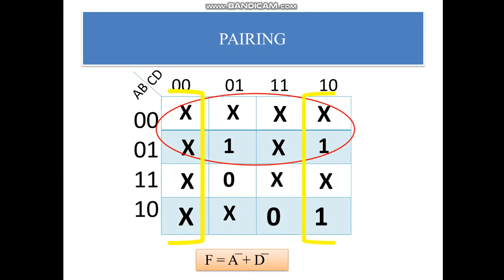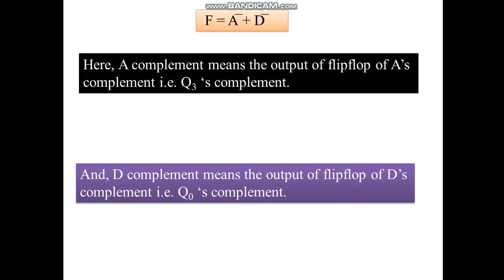The result, F equals to A complement plus D complement is shown now. Here, A complement means the output of a flip-flop of A complement, that is Q3's complement. And D complement means the output of a flip-flop of D complement, that is Q4's complement.